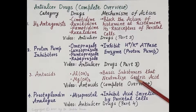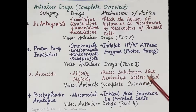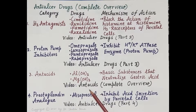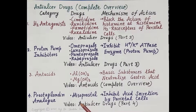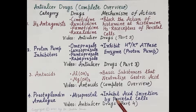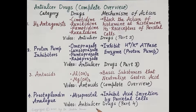Antacids are basic drugs that neutralize gastric acid. Examples include aluminum hydroxide and magnesium hydroxide. Complete pharmacology of antacids is covered in the video on antacids complete overview. Another category is prostaglandin analogues — misoprostol, a synthetic prostaglandin E1 derivative. Misoprostol binds to prostaglandin receptors and inhibits acid secretion by the parietal cells. Complete pharmacology of misoprostol is covered in anti-ulcer drugs part 4.